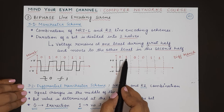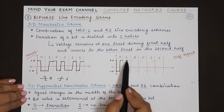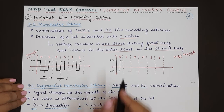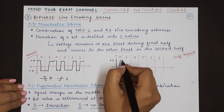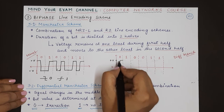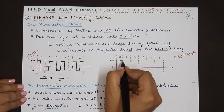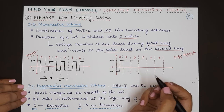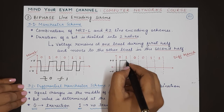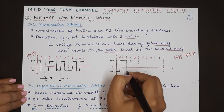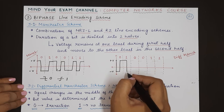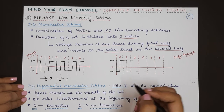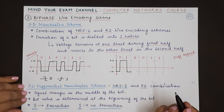The next bit is 1. One means no transition — the signal at whichever level it is right now continues at that level until the middle of the bit, then changes to the next voltage level and remains there until the end of the bit.